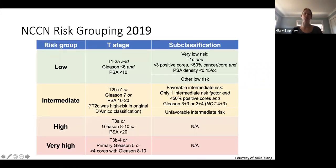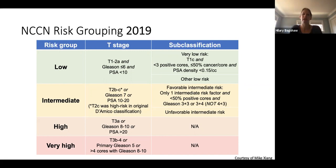More commonly, we use NCCN risk grouping. The NCCN is a commonly used resource giving information about different cancers and consensus treatment recommendations from panelists. We don't just use TNM staging to determine how someone should be treated for prostate cancer — we group them into risk groupings: low, intermediate, high, or very high.